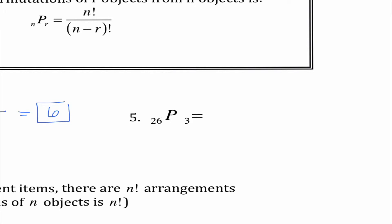Okay for number five this would be 26P3 equals 26 factorial over 26 minus 3 factorial. So 26 factorial over 23 factorial this is going to become 24 times 25 times 26 which is 15,600.